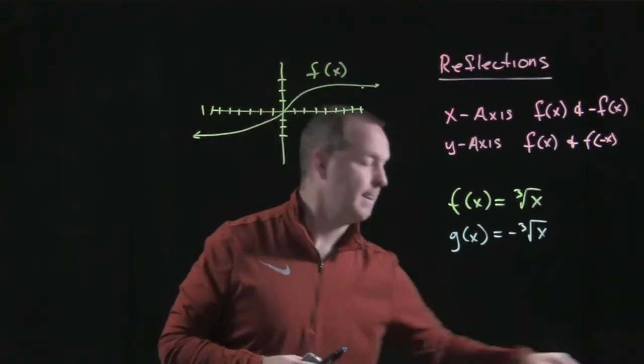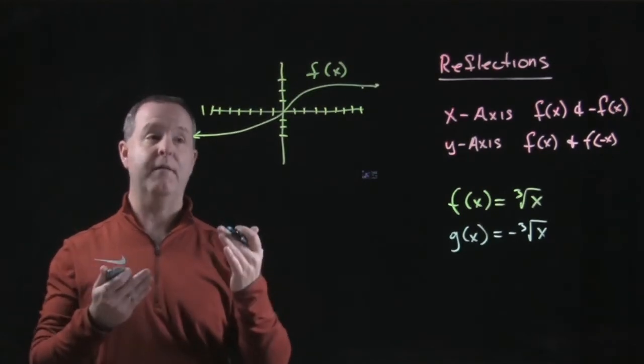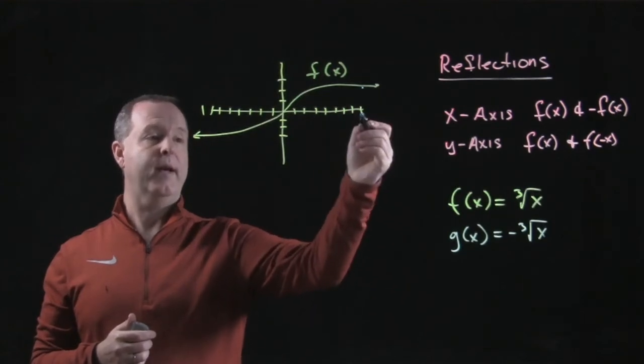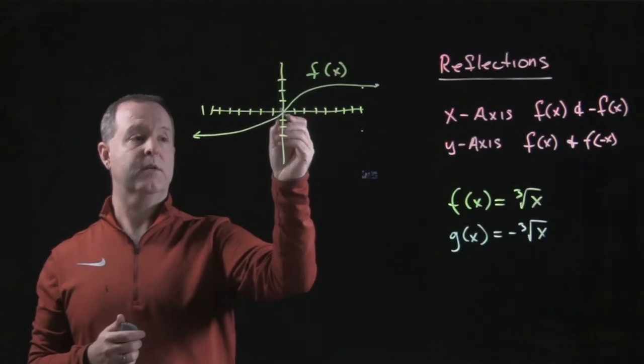Well, g(x) would be every point reflected about the x-axis. So this point (8,2) becomes the point (8,-2). Point (0,0) still stays (0,0).